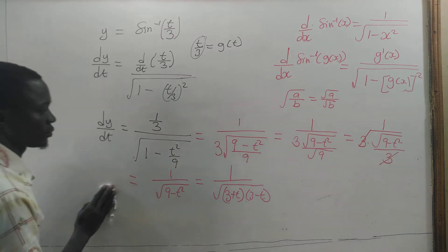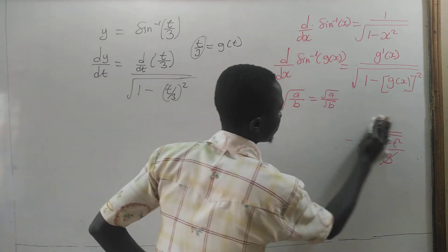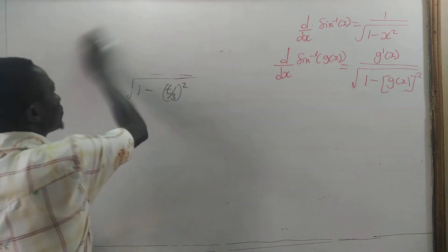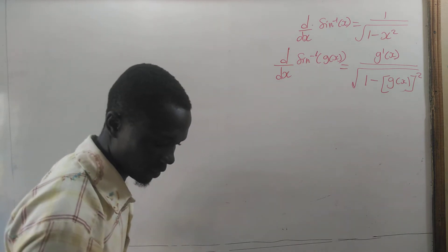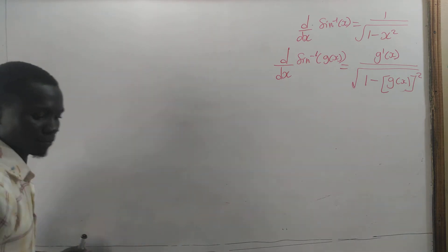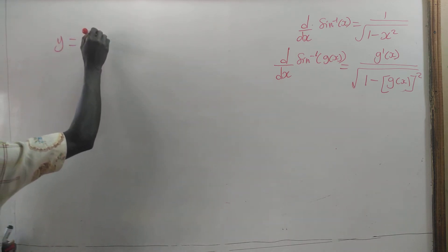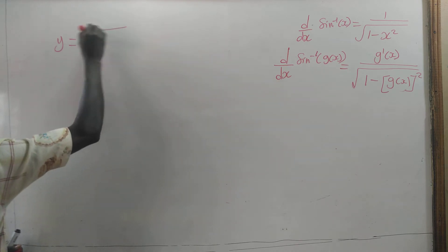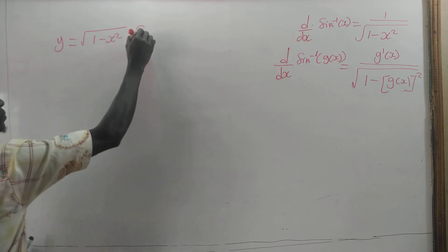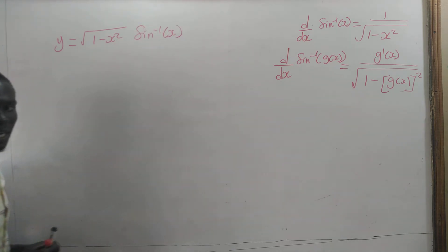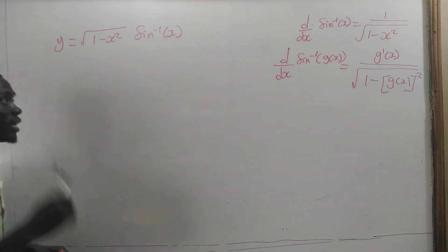Now let's take the next example. If I have y equal to the square root of 1 minus x squared times sin inverse of x, for this one we are going to use the product rule.